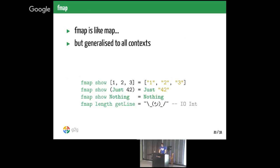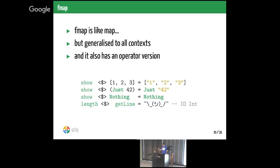I'm sad to say fmap has its own operator version, which you'll need to recognize when reading Haskell code in the wild. A way to remember it: $ is function application, and this operator is function application inside the context.